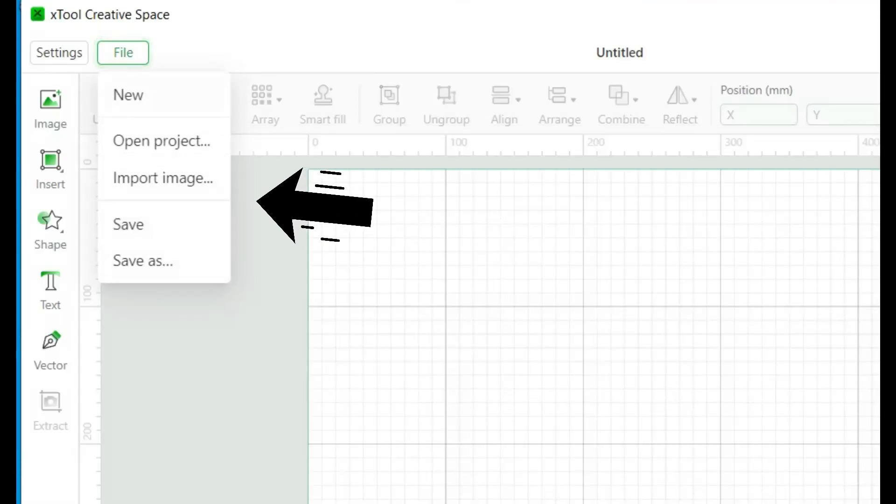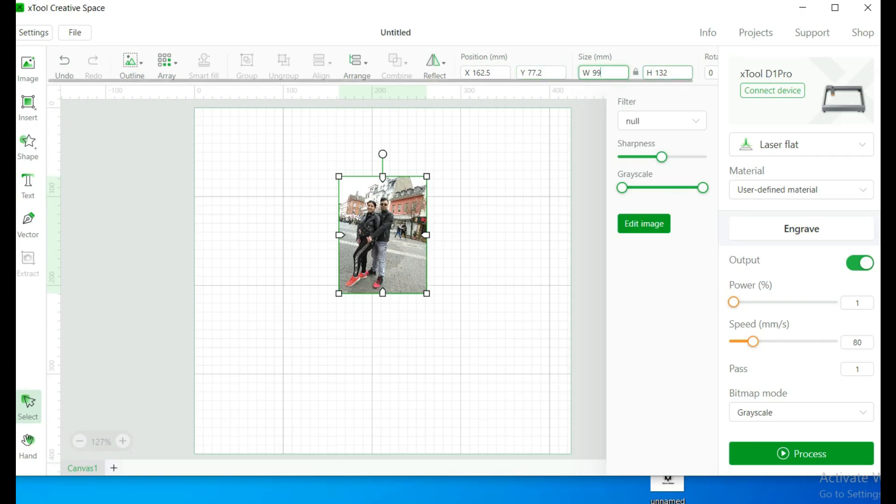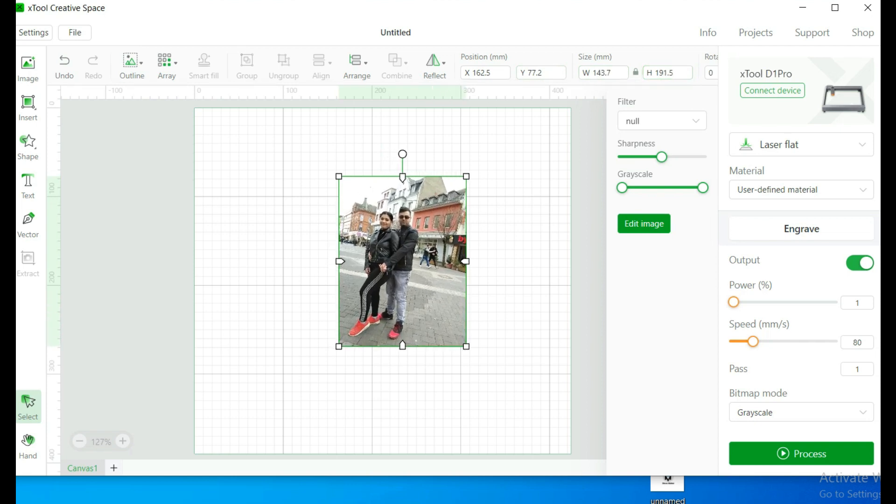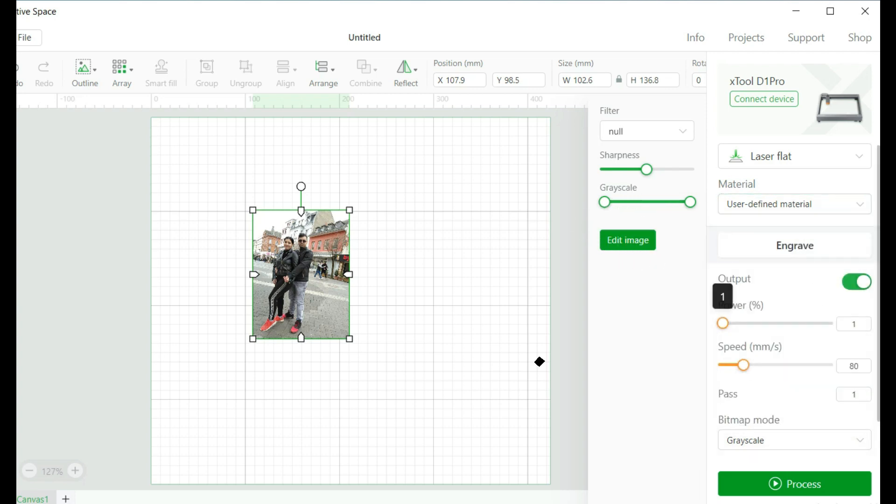I'll try to engrave my image by selecting a material and the program will automatically determine the parameters needed for engraving. You only need to select the image size, which is pretty cool. In case you want to set the parameters manually, you can do so by clicking on the user-defined material. You become a professional in this business without much knowledge.